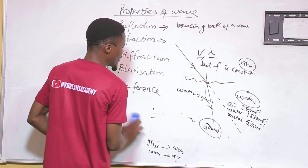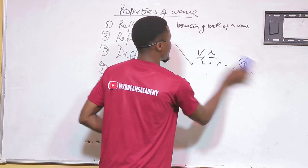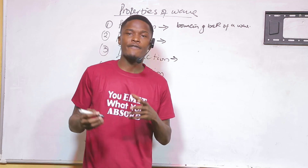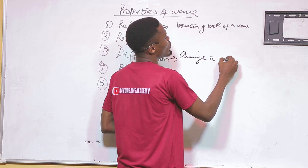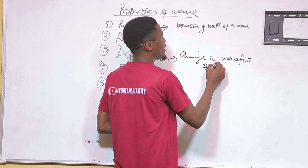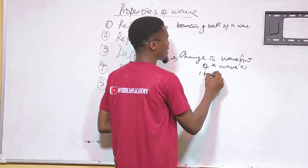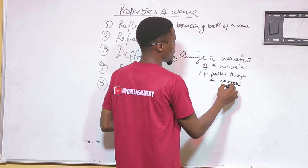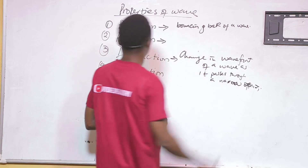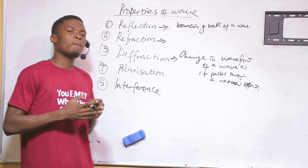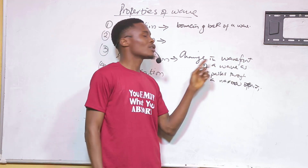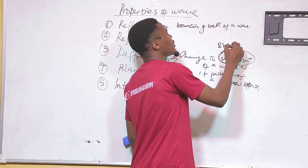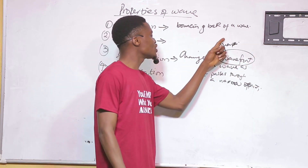Now let's talk about the property of diffraction. Diffraction is the change in wavefronts of a wave as it passes through a narrow opening. We can simplify the word 'wavefront' as the shape of the wave, so diffraction is the change in shape of a wave as it passes through a narrow opening.